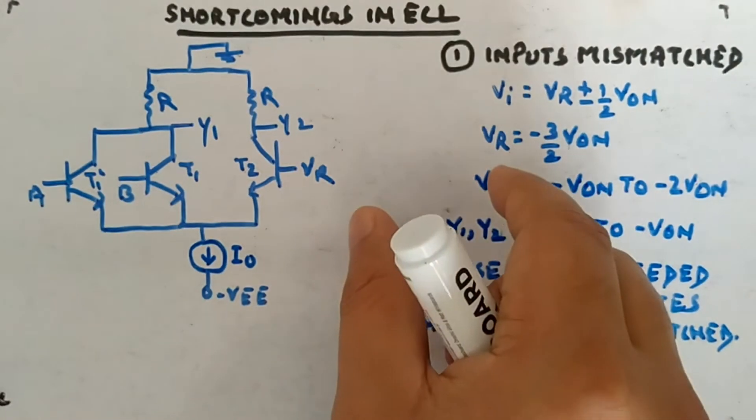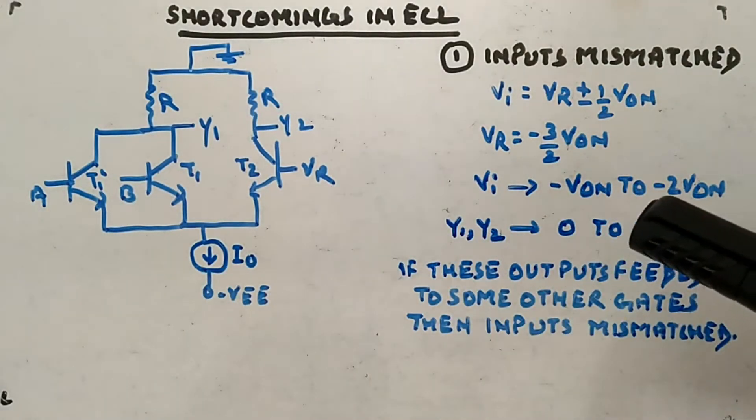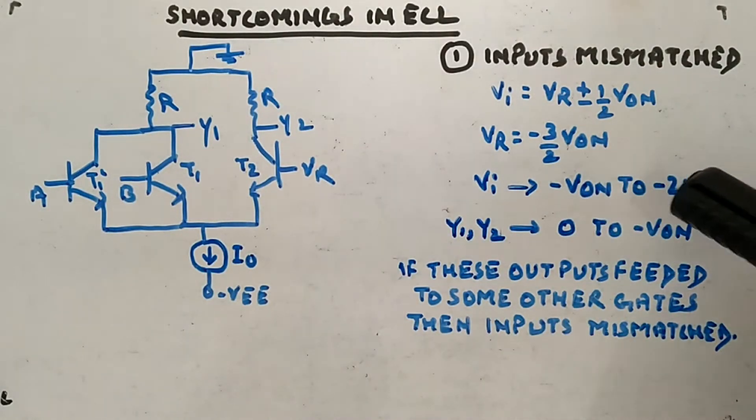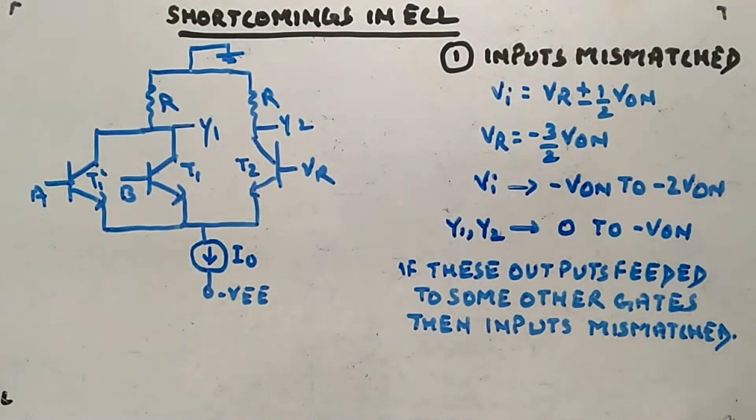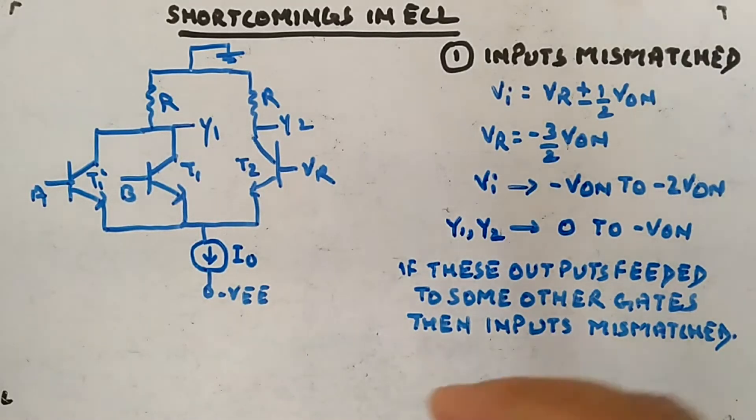You will be having transistors like this. You want the output input to be in this range, but through this output you are providing the input value in this range. That's why the problem is occurring. Input is mismatched. This is one problem.